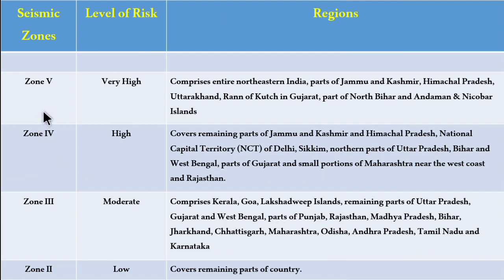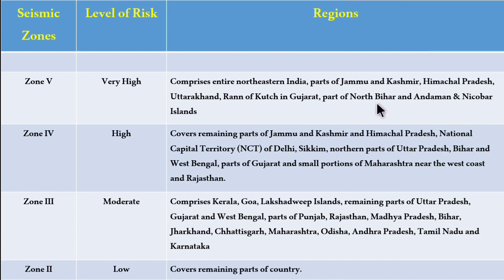Zone 5 comprises the entire northeast India, parts of Jammu and Kashmir, Himachal Pradesh, Uttarakhand, Rann of Kutch in Gujarat, parts of North Bihar and the Andaman and Nicobar Islands. The effect of earthquake is very high in this region.